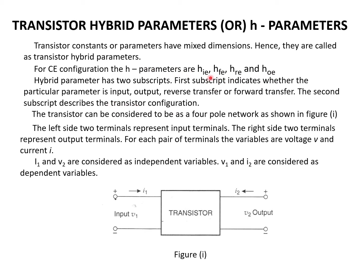For the CB configuration of the transistor, the H-parameters will be HIB, HFB, HRB, and HOB. And for CC configuration, they are HIC, HFC, HRC, and HOC. That means the second subscript represents the transistor configuration.